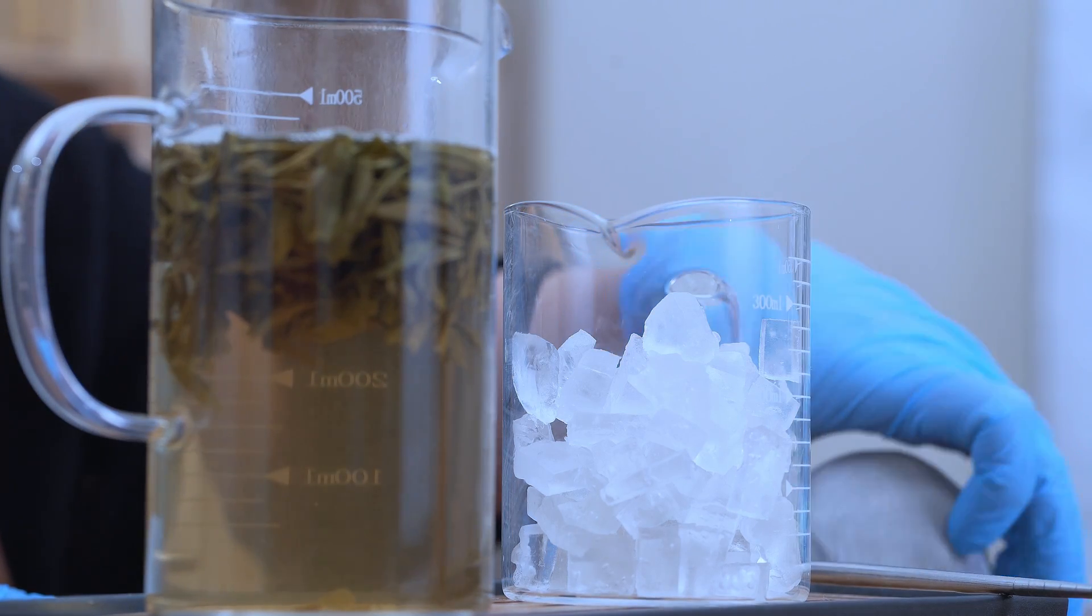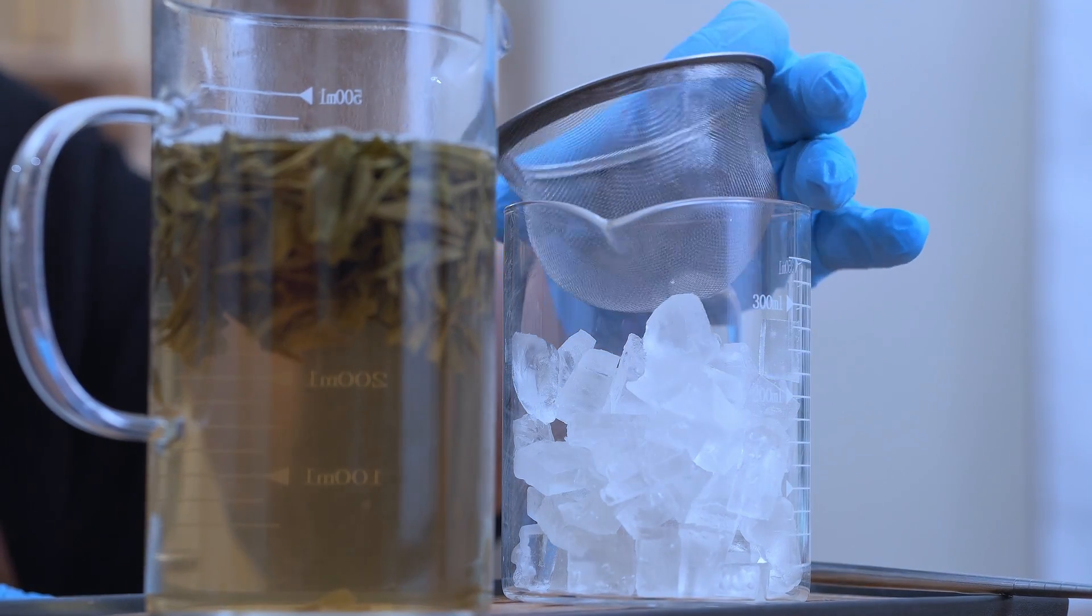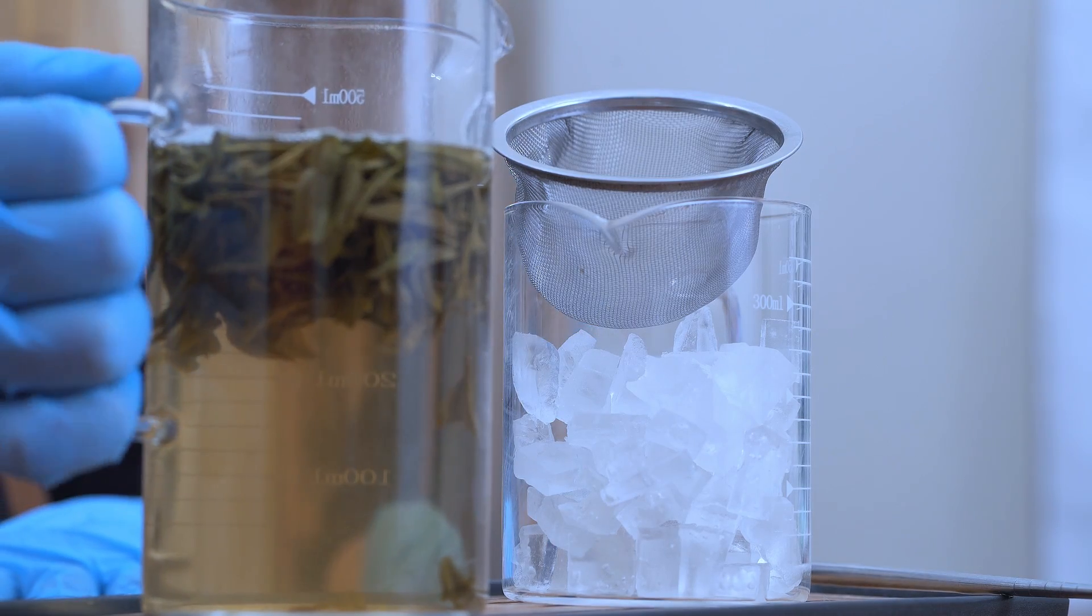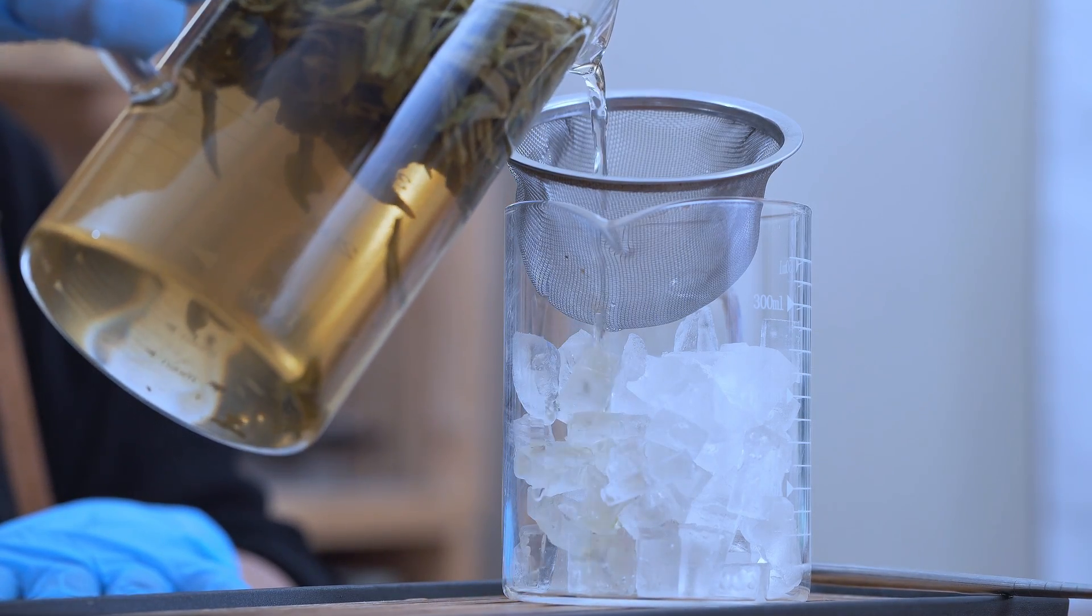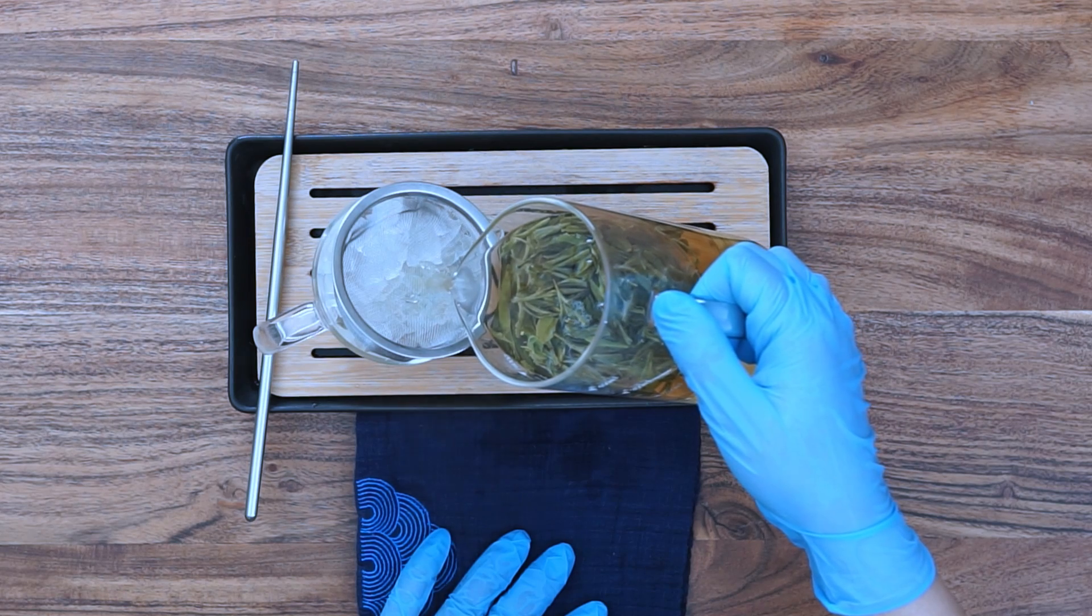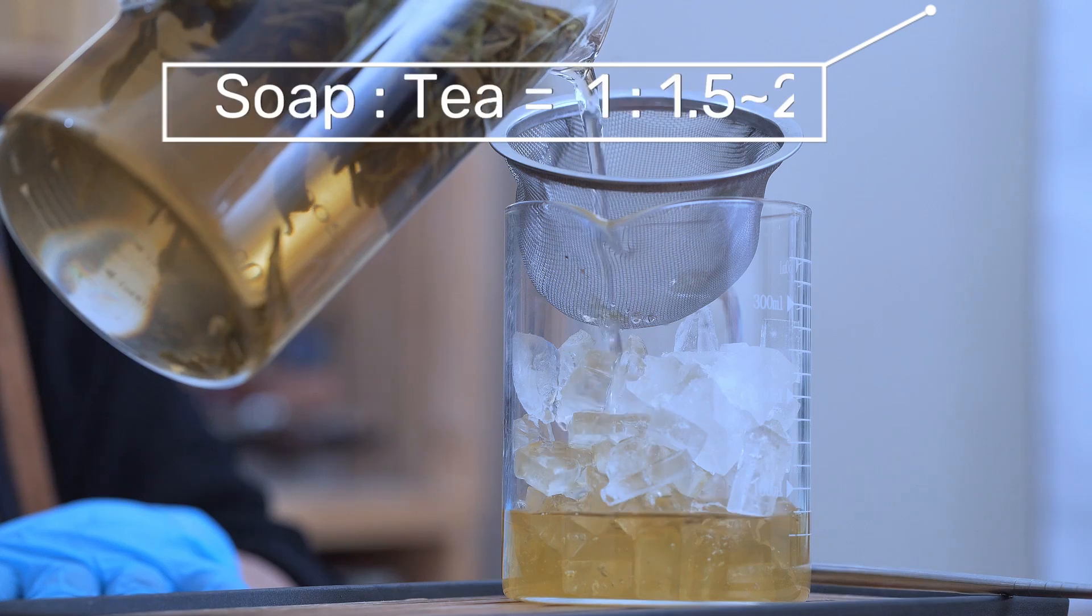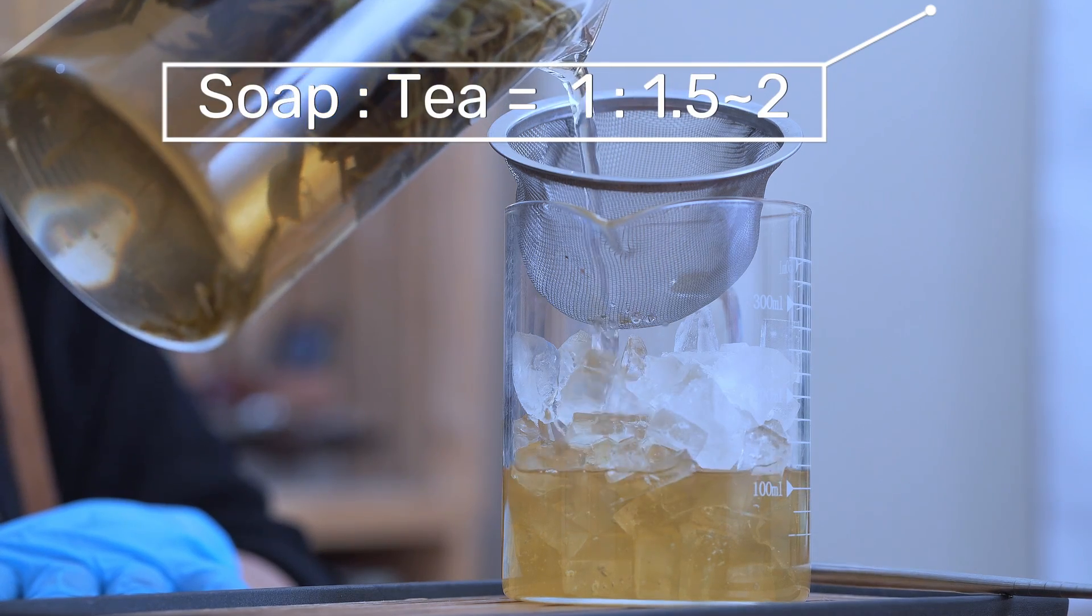The end result is a delightful green tea foaming face washer. Maintain a ratio of one part soap to 1.52 parts of green tea for optimal dilution.